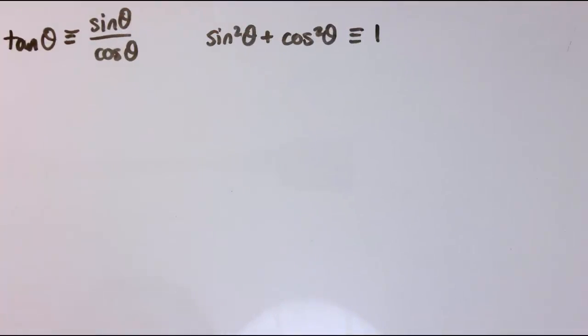In this video, I'm going to use these two identities: tan θ equals sin θ over cos θ, and sin² θ plus cos² θ equals 1, which I've proved in a different video, to solve a few equations.